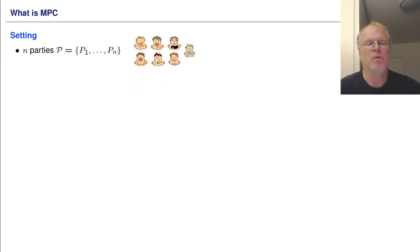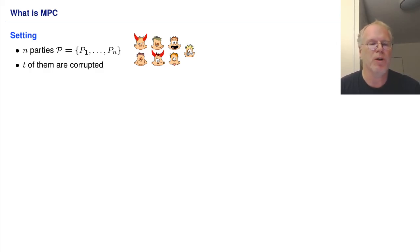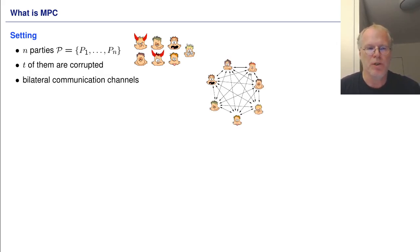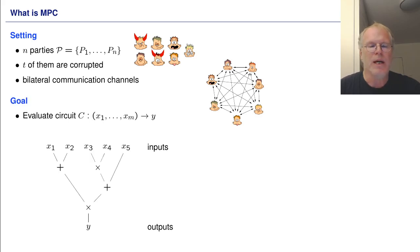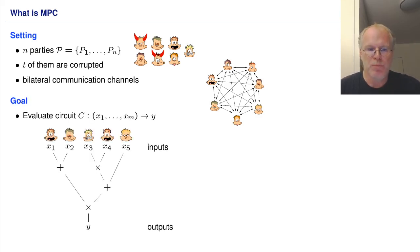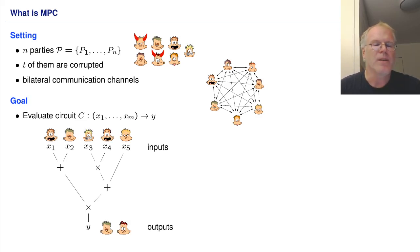What is MPC? We consider N parties, T of them are corrupted. The parties are connected with bilateral channels. The goal of MPC is to evaluate a circuit where each input is given by one of the parties and the output is revealed to entitled parties.